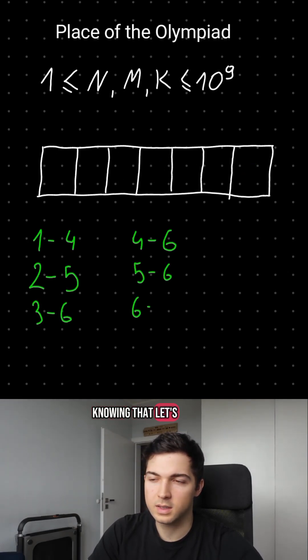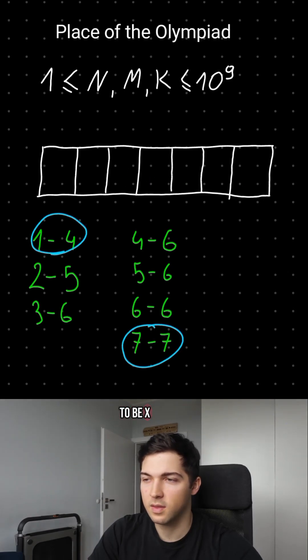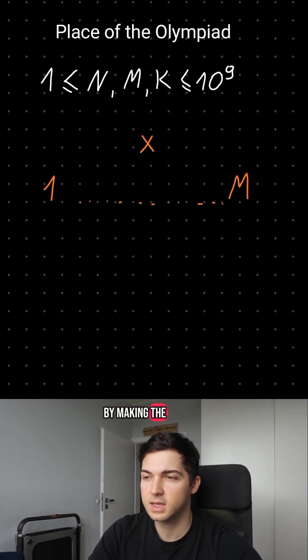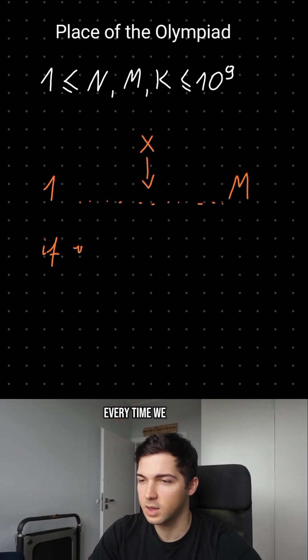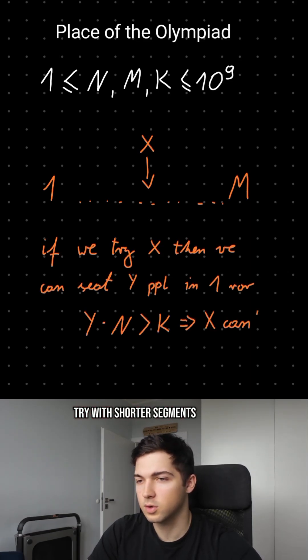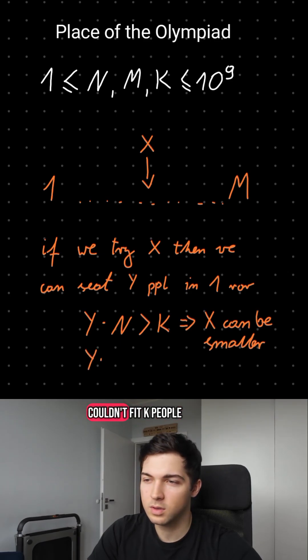Knowing that, let's assume the answer to be x. Then we can check how many seats we can fit in the venue by making the segments of length x every time we can. If the number is larger than k then we can try with shorter segments. And if we couldn't fit k people then let's try with longer segments.